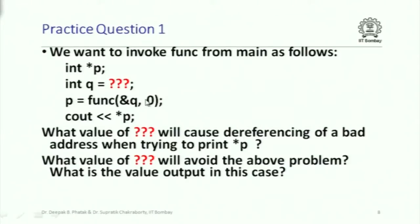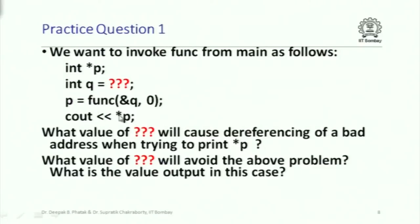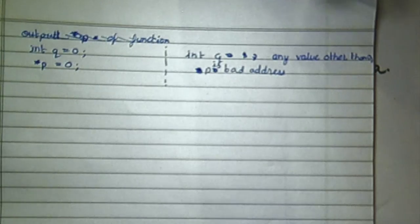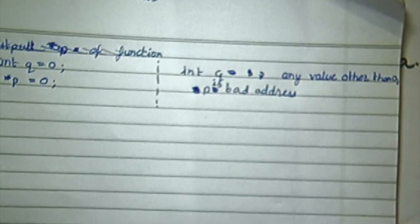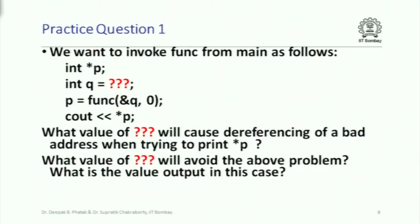One student suggests q initialized to 0. In that case, ampersand q and 0 are the two arguments. Star of ampersand q gives the value of q, which is 0, and b is already 0 — so 0 equals 0, meaning the function returns a, which is the address of q. Therefore p gets the address of q, and since q is a local variable in main, dereferencing p is fine. However, if q is any value other than 0, something different happens.